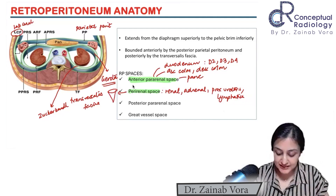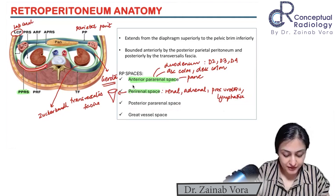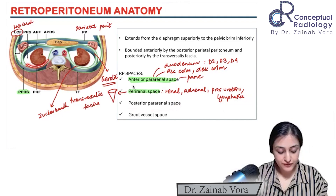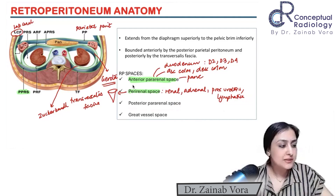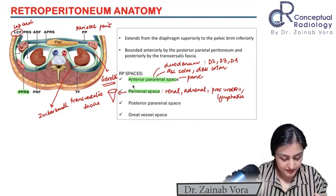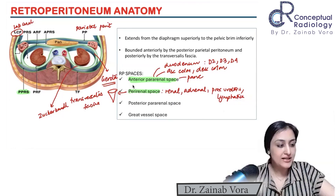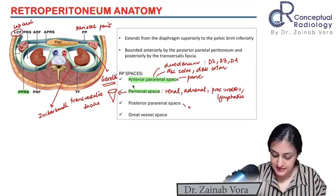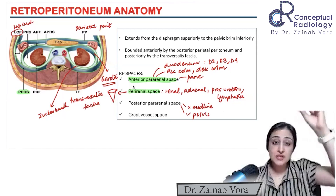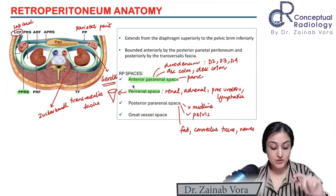Now let's go to the posterior pararenal space. The boundaries are: anteriorly — Gerota's fascia, and posteriorly — transversalis fascia. There is nothing special here — it's only connective tissue. Importantly, it does not meet in the midline, and this space is continuous from the diaphragm all the way down to the pelvis. It contains fat, connective tissue, and some nerves.